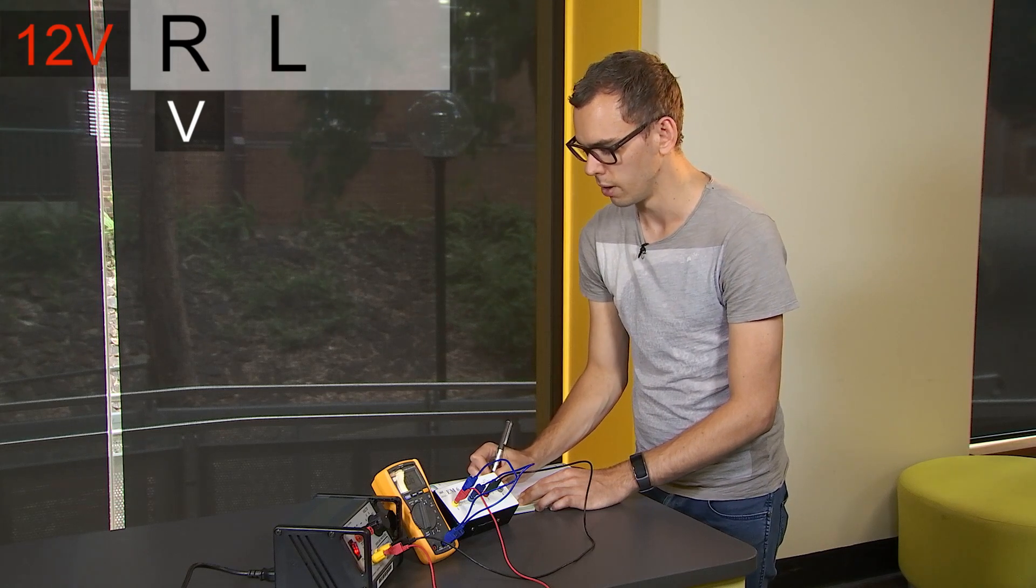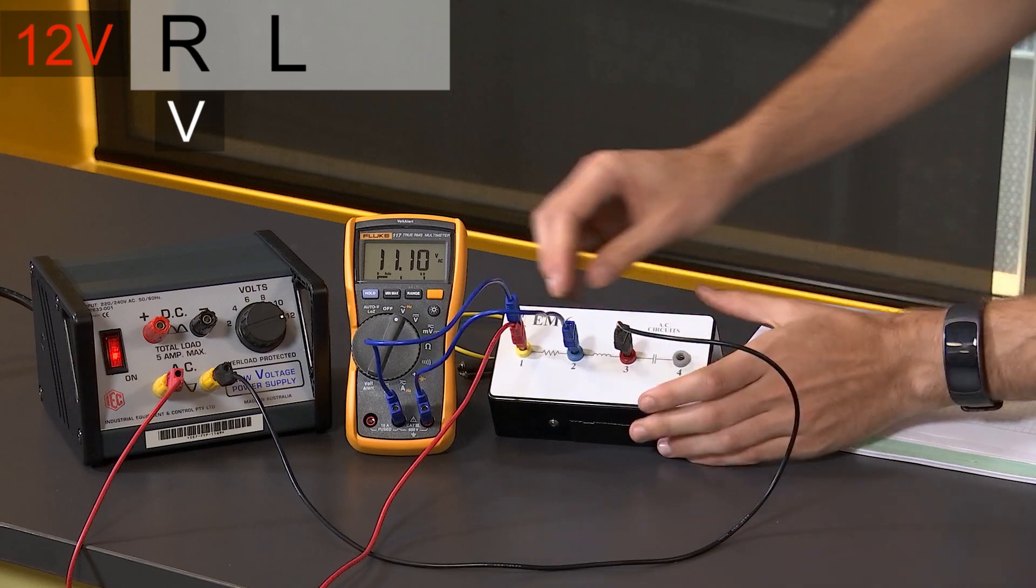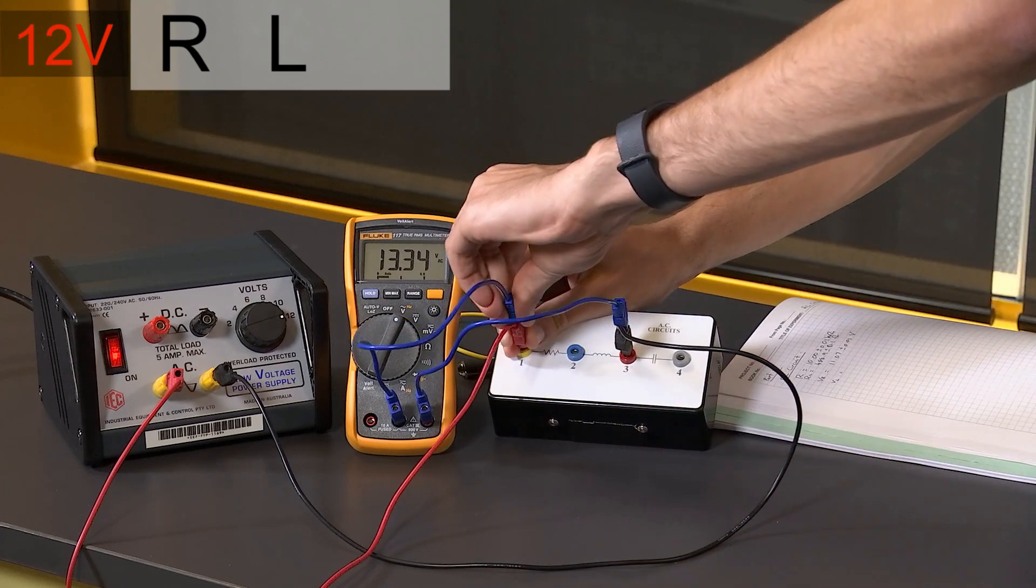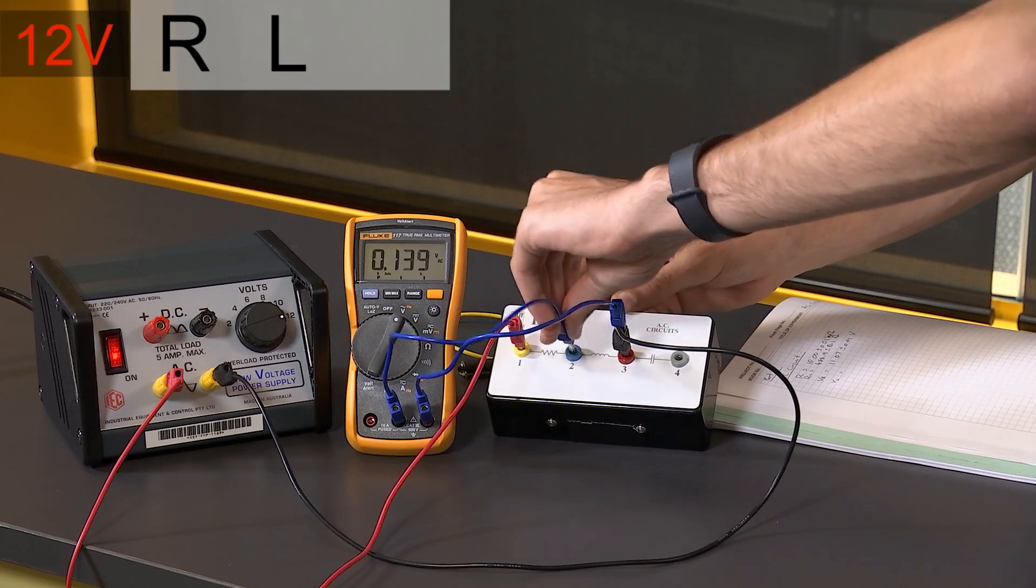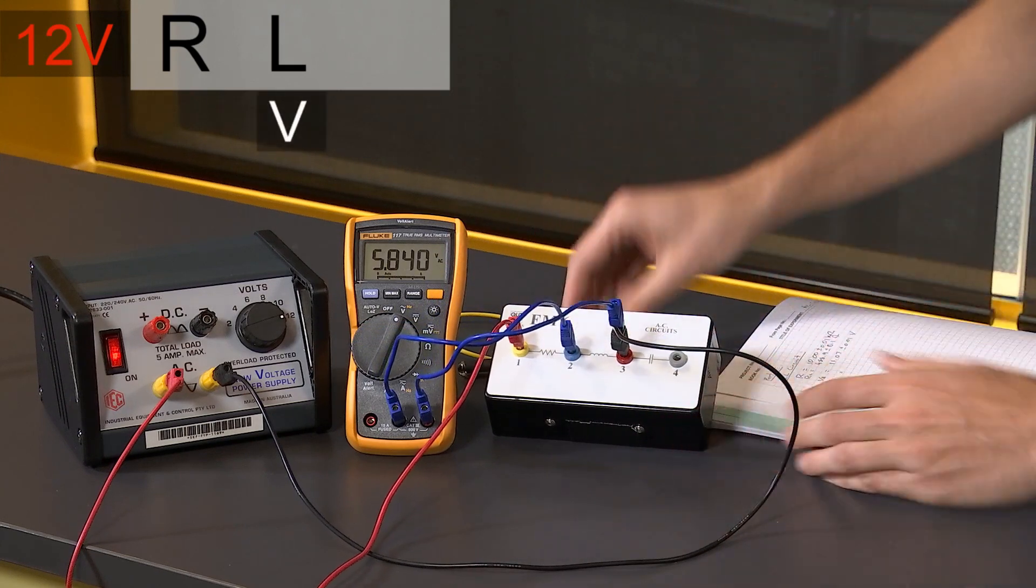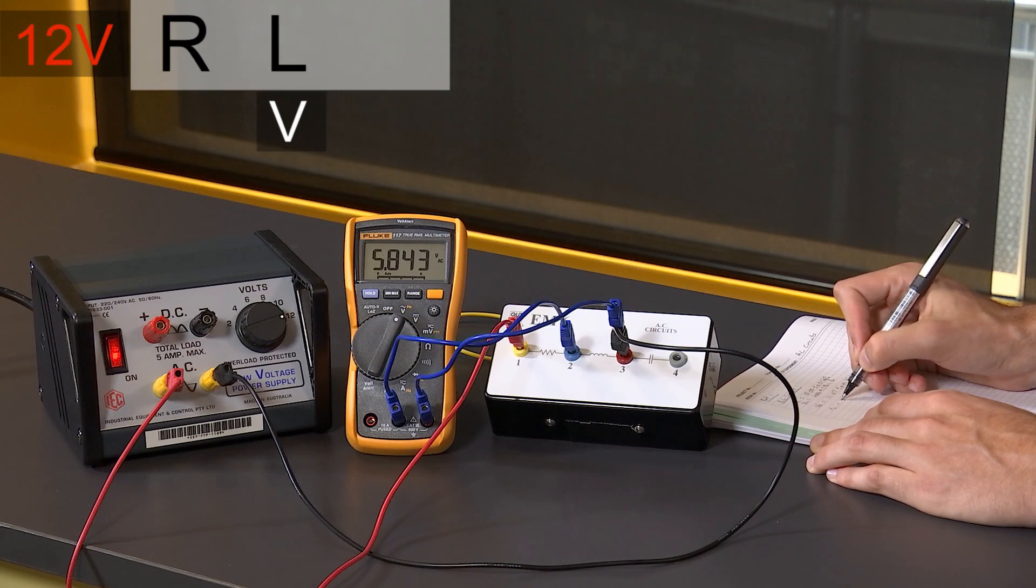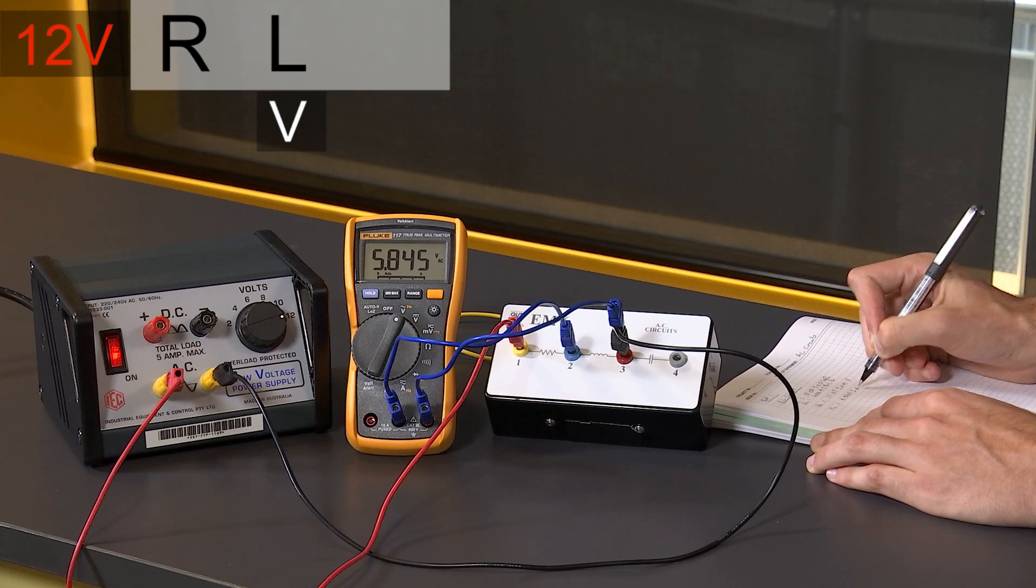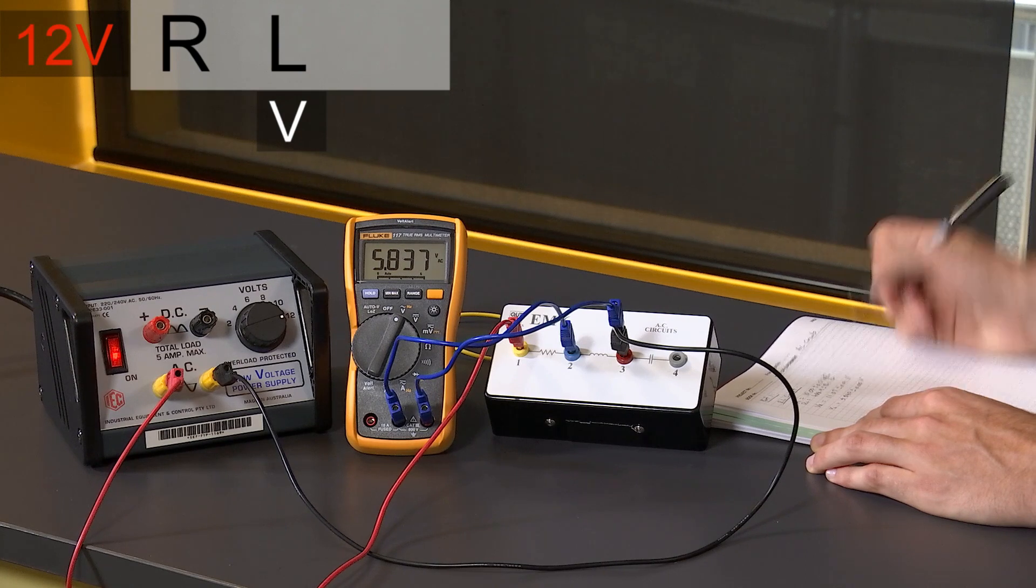I'm going to do the same to measure the voltage drop across the inductor here and that's 5.840 plus or minus 0.05 volts.